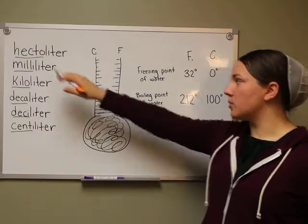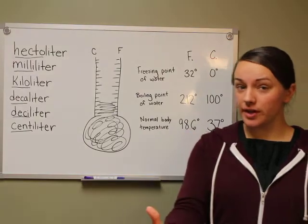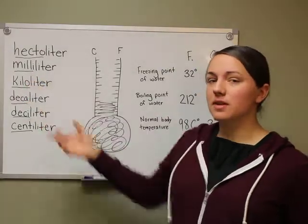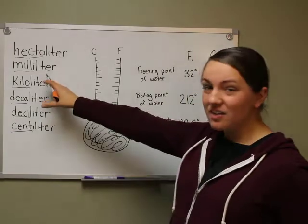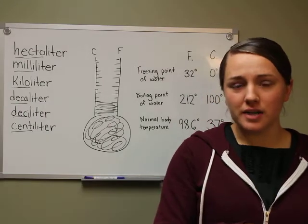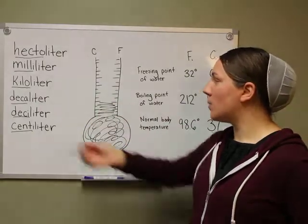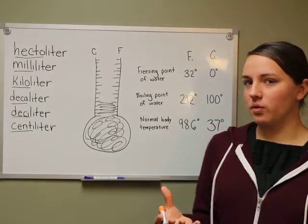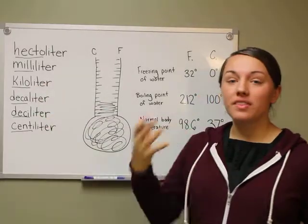So if we would have a hectoliter, what does hecto mean? Hecto means 100, so a hectoliter is 100 liters. Milli — what does milli mean? Milli means one-thousandth. So a milliliter is one-thousandth of a liter. It means if you take one liter and divide it into 1,000 parts and choose one, that is a milliliter. What about a kiloliter? Kilo stands for 1,000, so a kiloliter is 1,000 liters.